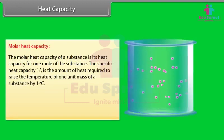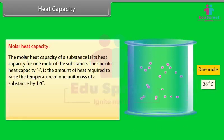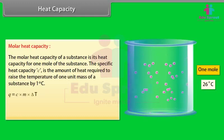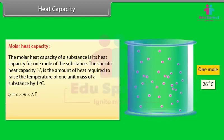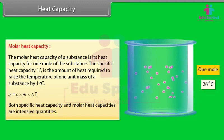The molar heat capacity is the amount of heat required to raise the temperature of 1 unit mass of a substance by 1 degree Celsius. Q = C × m × ΔT. Both specific heat capacity and molar heat capacities are intensive quantities.